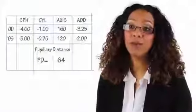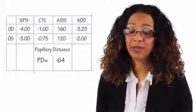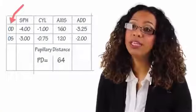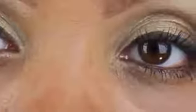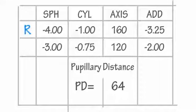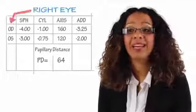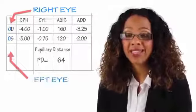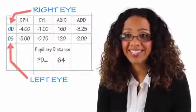So the most common terms you'll encounter are OD and OS. OD stands for right eye and OS stands for left eye. But sometimes prescriptions will just have an R and an L, which we all find easier to understand. So remember, OD means right eye and OS means left eye.